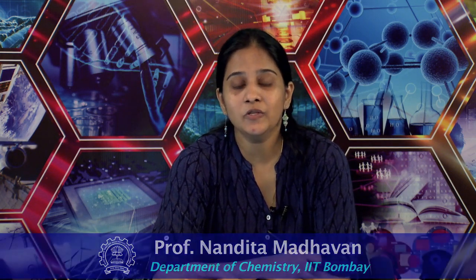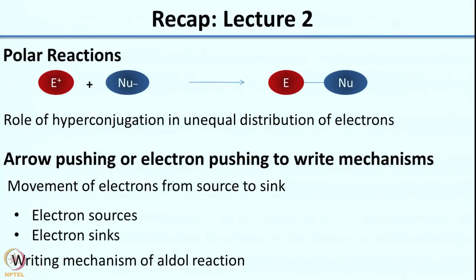Welcome to the third lecture. Before we start, a quick recap of what we did in the earlier lectures. We had classified organic reactions, particularly polar reactions. In polar reactions you have an electrophilic centre and a nucleophilic centre, and we looked at the role of hyperconjugation in the unequal distribution of electrons. In lecture 1 we had looked at the inductive effect and resonance effect.